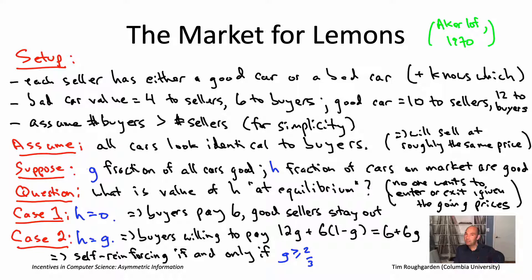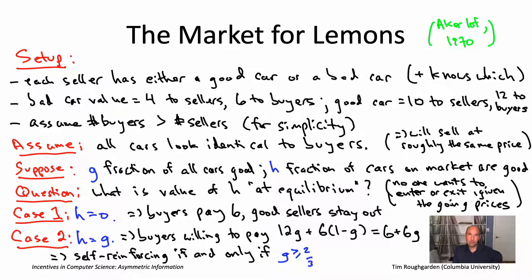Conversely, if G is less than two-thirds, buyers are only willing to pay a price below ten, so good-car sellers will exit the market. You'll be left back in the H equals zero case — a market with only bad cars.